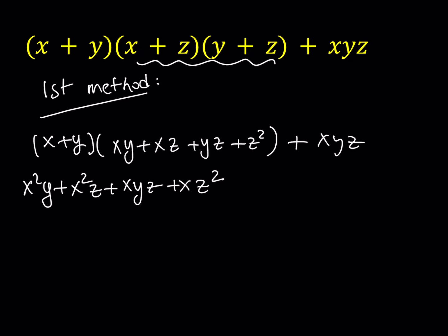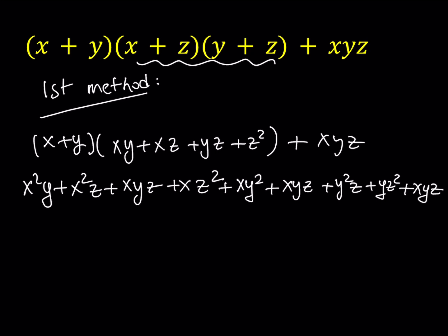Then I'll distribute the Y. When I distribute the Y and I'm trying to keep them in alphabetical order, it's going to look like XY squared plus XYZ plus Y squared Z. And then when I multiply Y by Z squared, finally it's going to be YZ squared. And at the end, I'm just going to add the single XYZ. So that's my expression.